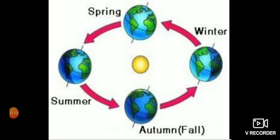Do you all remember what is revolution? Revolution is the movement of the earth around the sun in its own orbit. The path on which the earth is moving is called the orbit. Is the sun moving? No, the sun is in the middle — it is not moving. So what is moving? The earth. The earth is revolving around the sun and the path on which it moves is called the orbit. We had seen this in the previous video.